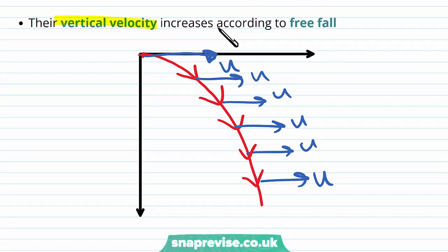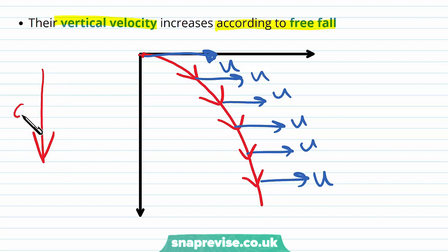The vertical velocity increases according to freefall. So we've said that the object experiences a gravitational acceleration g, and this is constant. We've also said that there is no initial component to the vertical velocity.